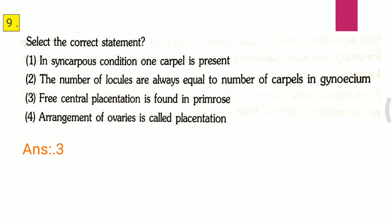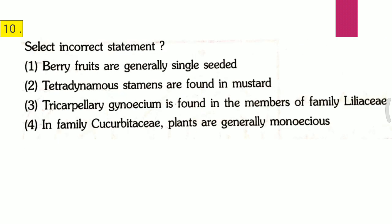Question ten: Select the incorrect statement — first, berry fruits are generally single seeded; second, tetradynamous stamens are found in mustard; third, tricarpellary gynoecium is found in members of family Liliaceae; fourth, in family Cucurbitaceae plants are generally monoecious. The incorrect statement is the first one, that is berry fruits are generally single seeded.